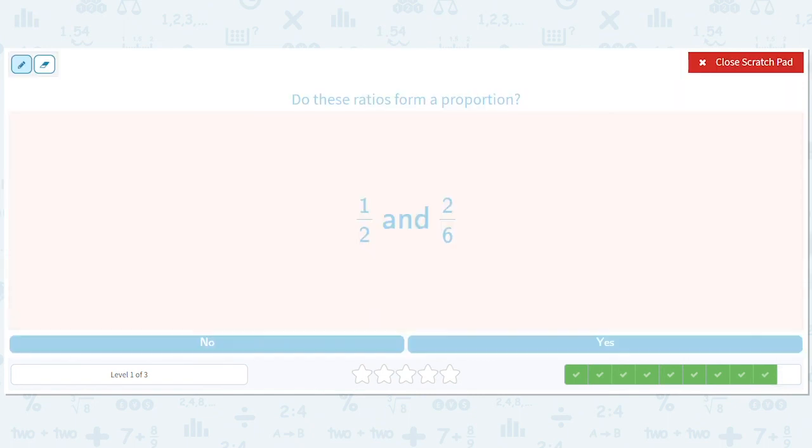How about this? One times two is two. Two times three is six. That's bad. So they're not in proportion.